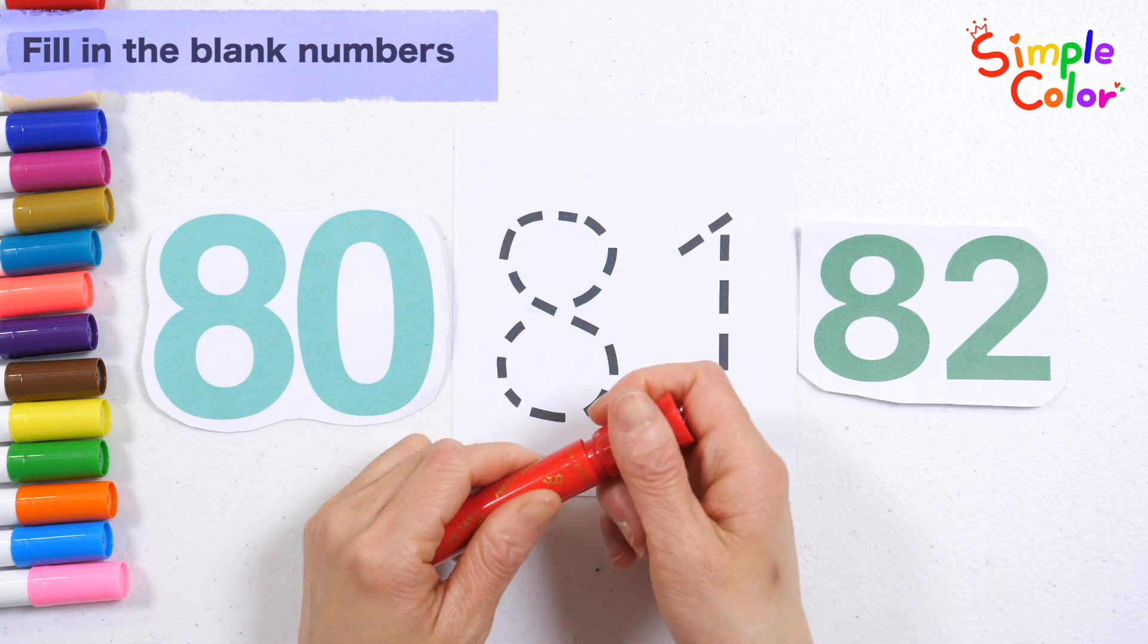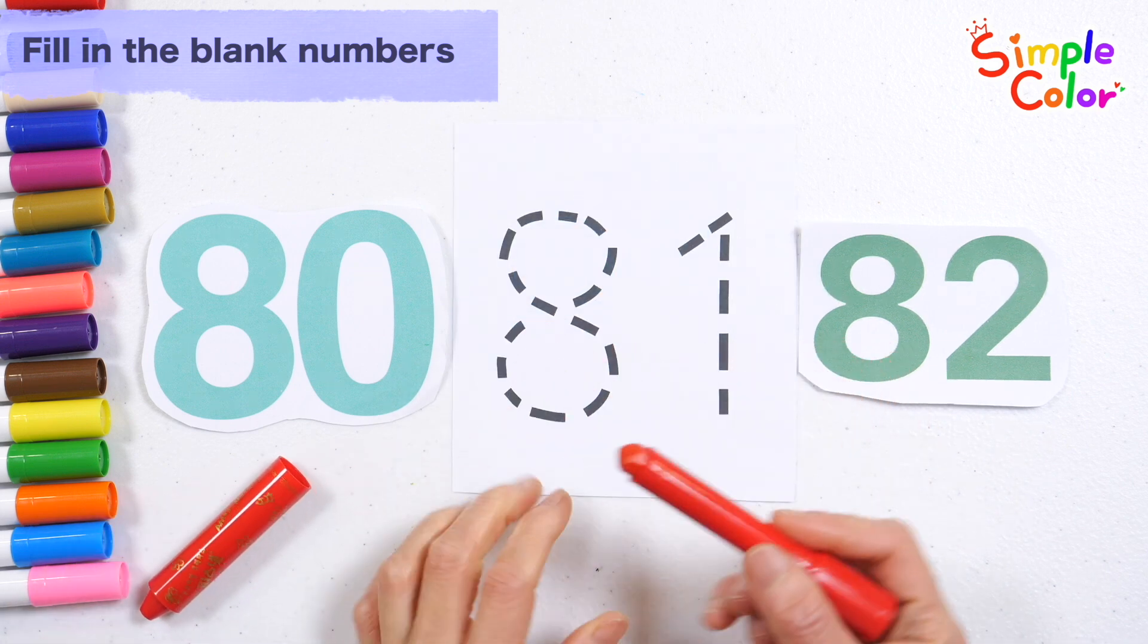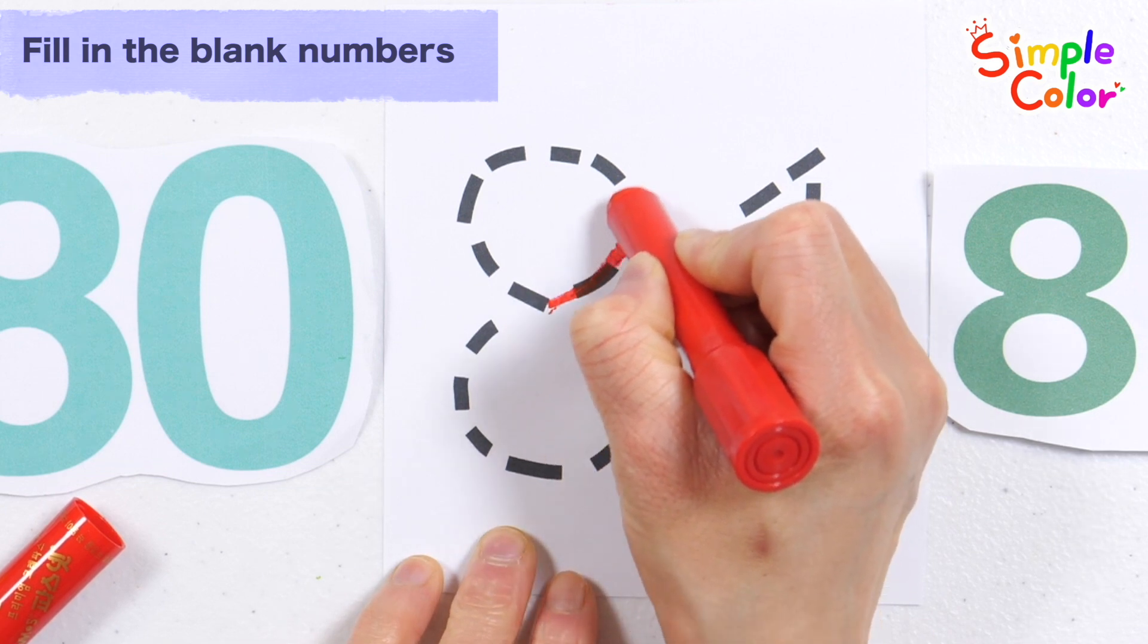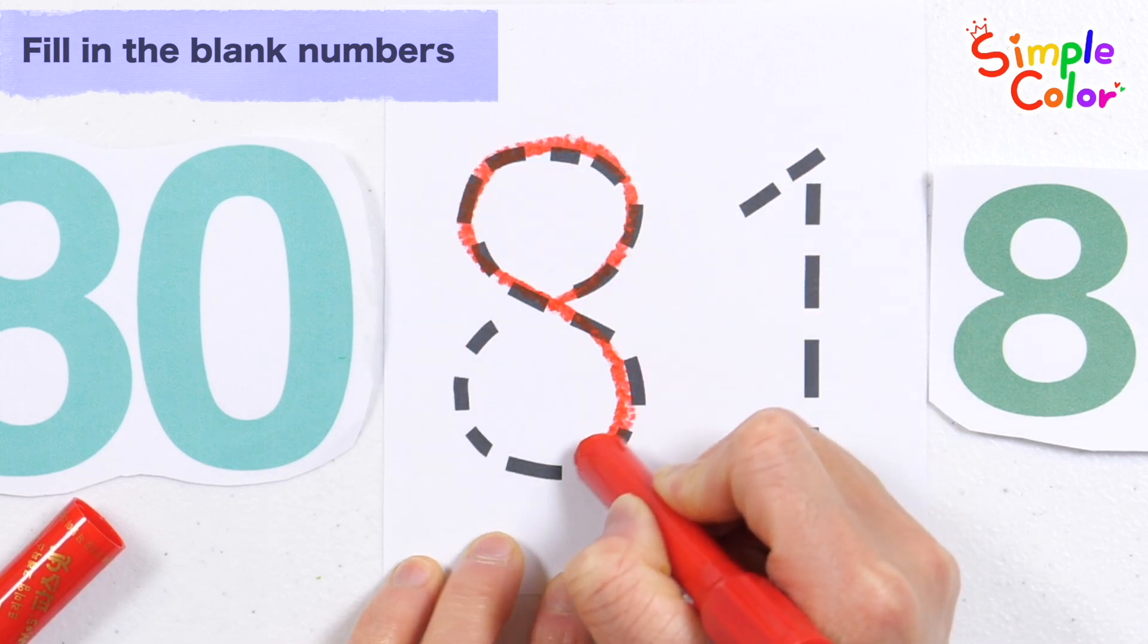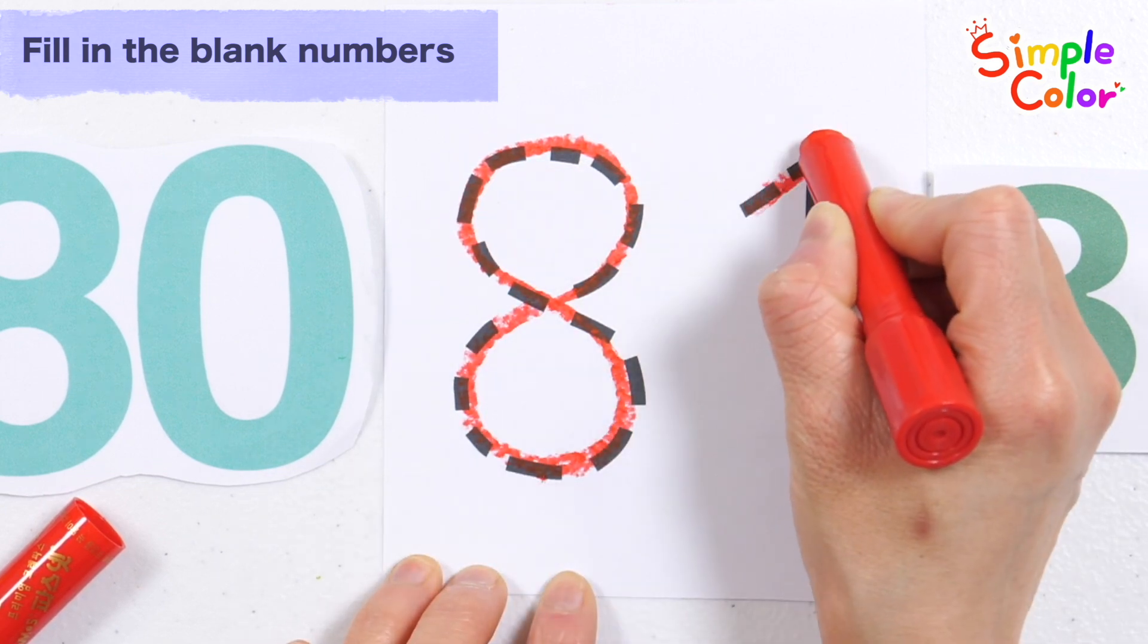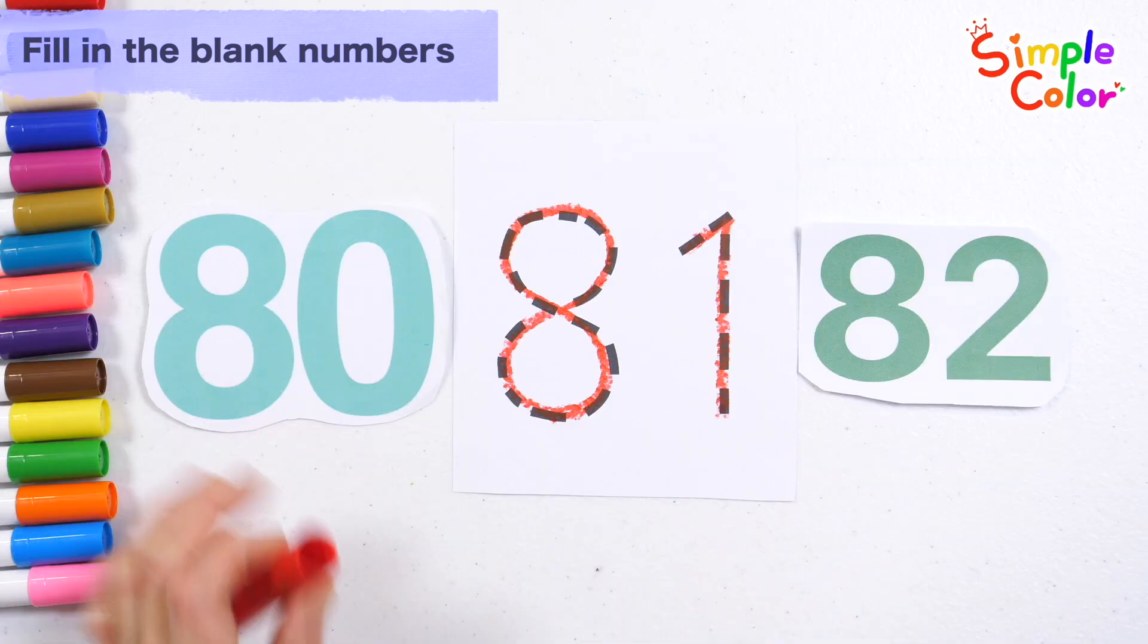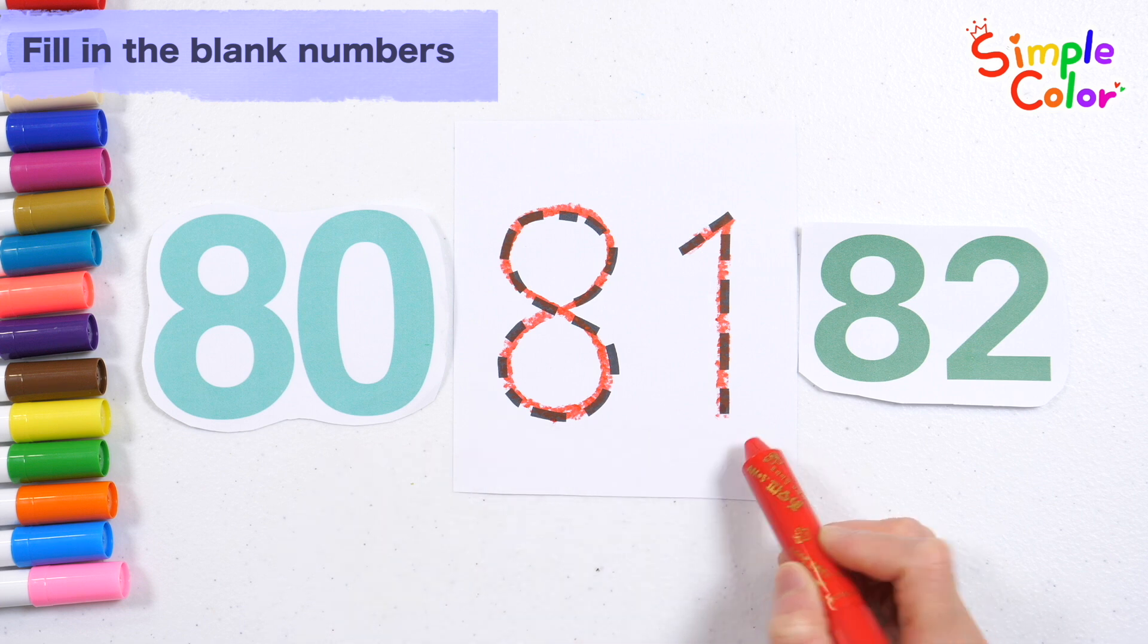Shall we write the number by tracing the dotted line? Very good! Let's read the numbers again: 80, 81, 82. Great job!